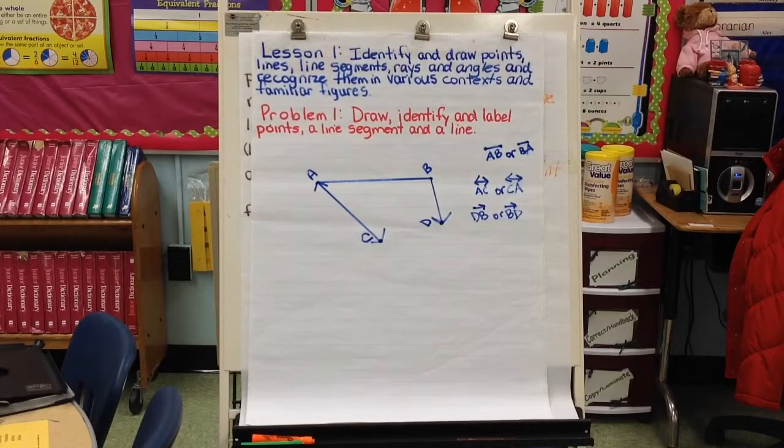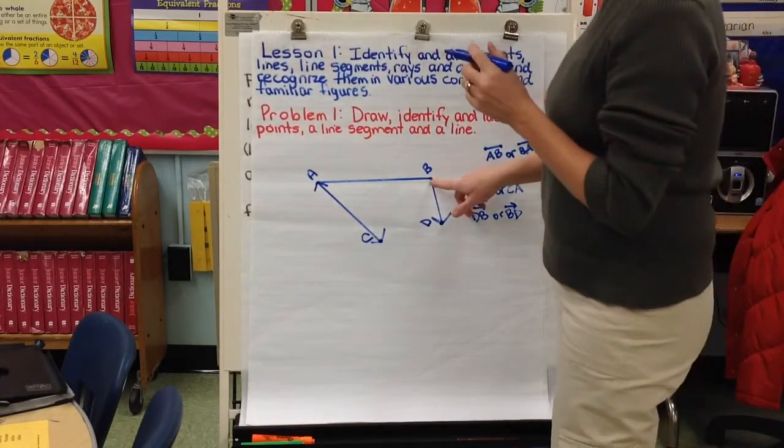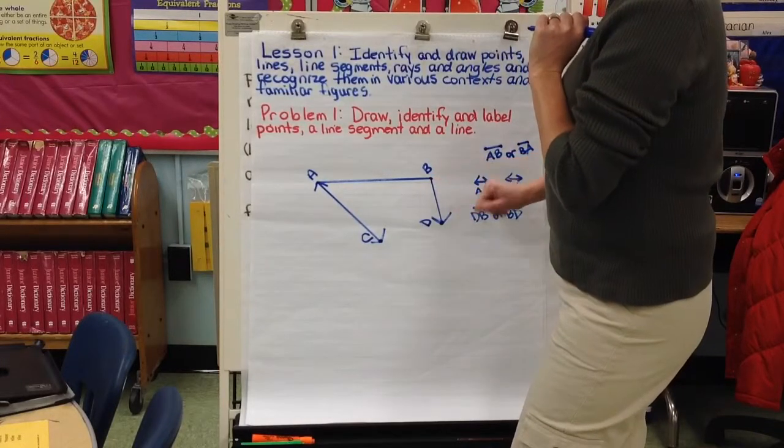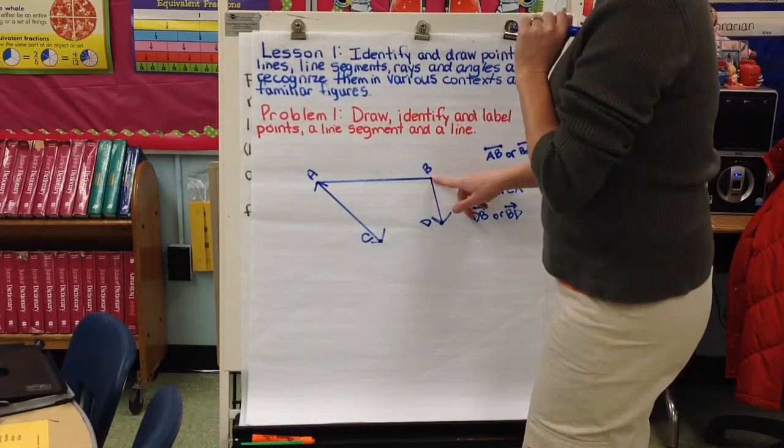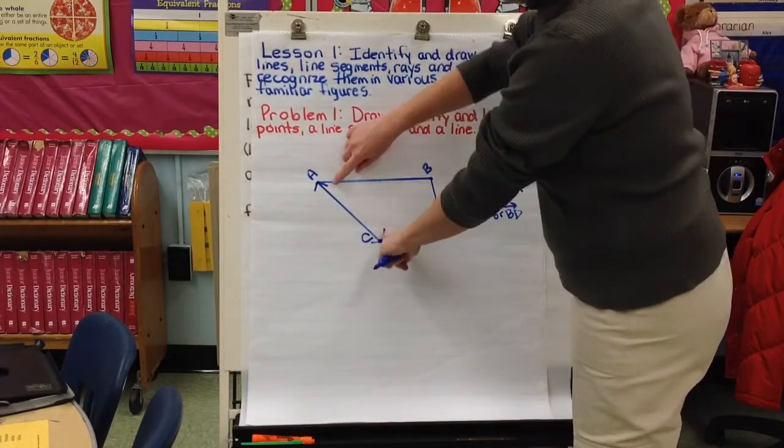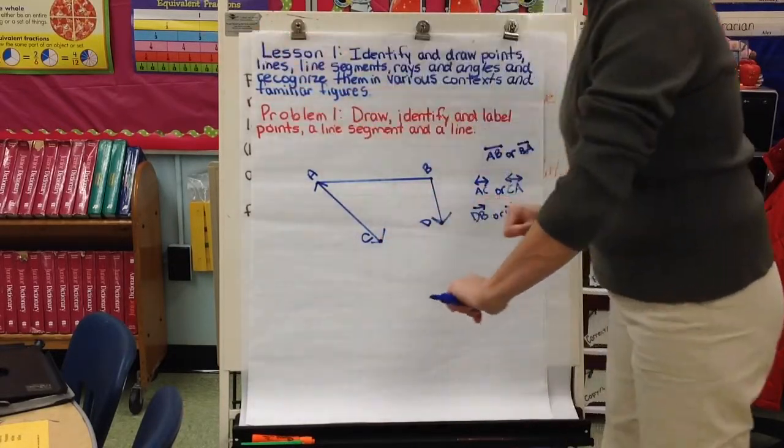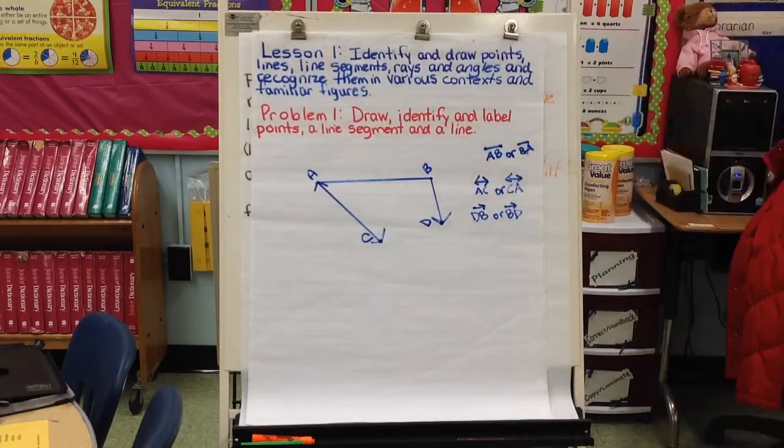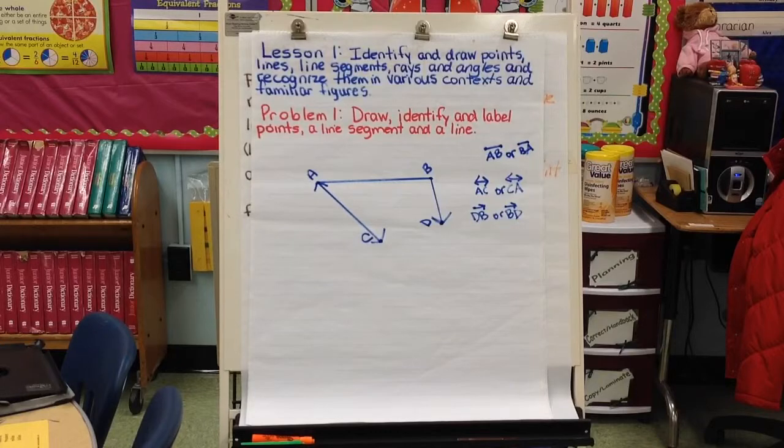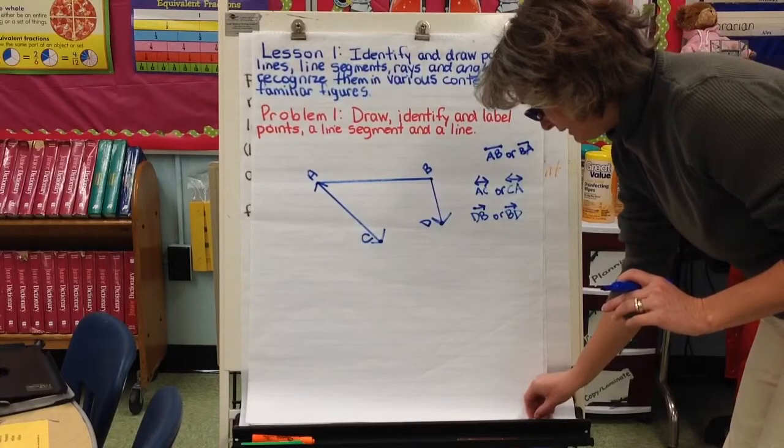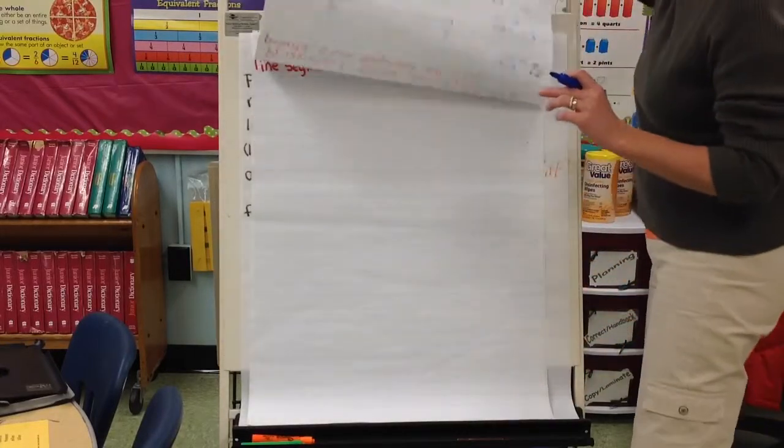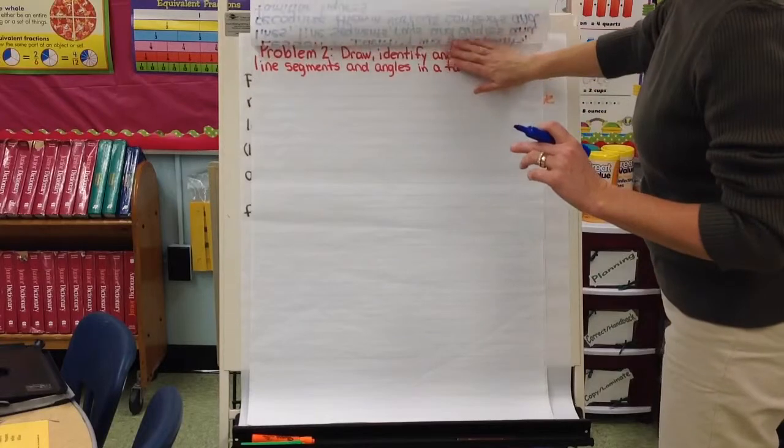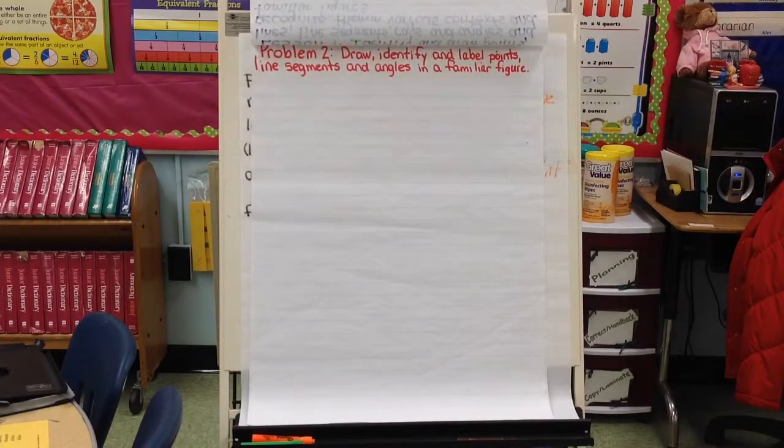So, boys and girls, we have drawn a point, which just marks a particular location. We've drawn a line segment, which is part of a line, we've drawn a line, and we know this is a line because it extends in both directions. We've also drawn a ray, and a ray is one point and extends in only one direction. Let's move on to problem two.